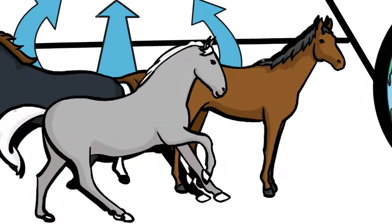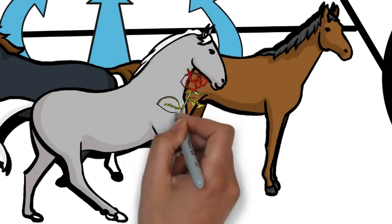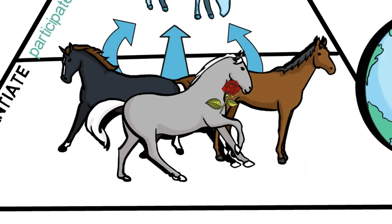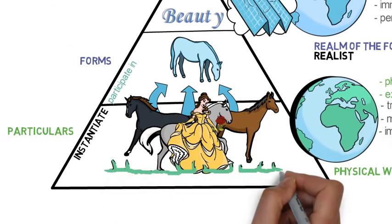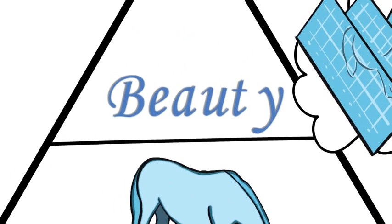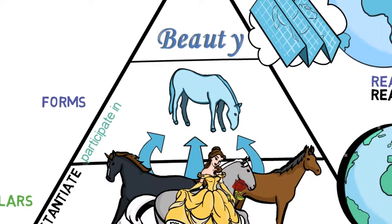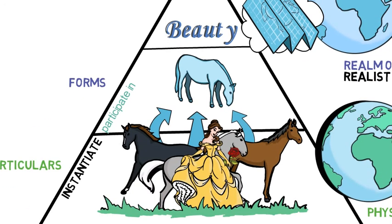Some particulars correspond better to their forms than others do. For example, you might have a beautiful rose, a beautiful woman, a beautiful horse, all instantiating the form of beauty. Some things might instantiate the form of beauty better than others, so the more beautiful the particular, the better it instantiates the form of beauty.